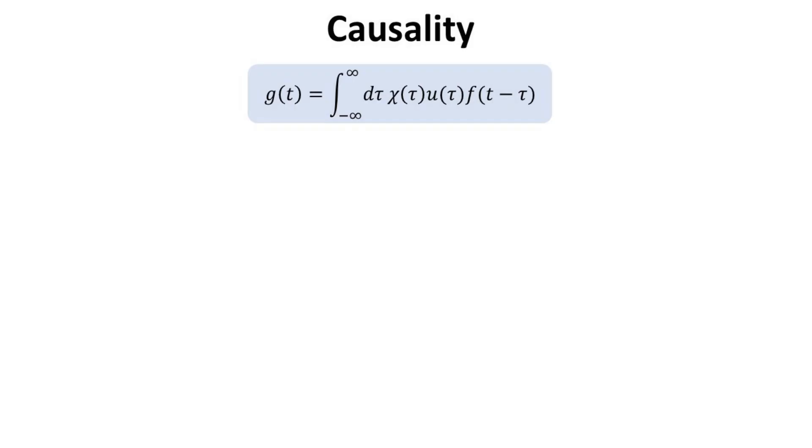At this juncture, we should mention that there are other equivalent forms to writing the response of our LTC system. To make transparent the inherent causality in our model, it will be helpful to ascribe another time variable. For the input F, by letting T' equals to T minus Tau.